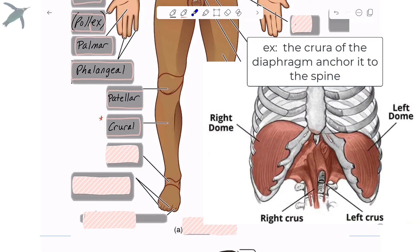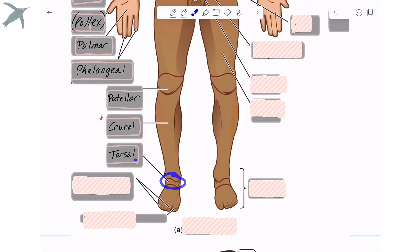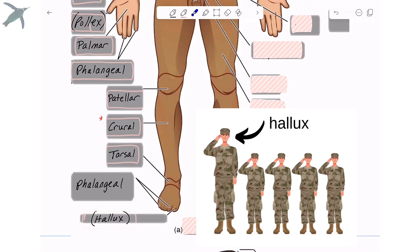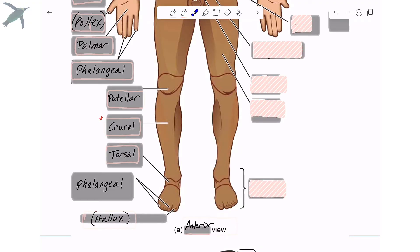The ankle region is known as the tarsal region. And we get a repeat here. The toes are also referred to as the phalangeal region. And we do have a term for the big toe, the hallux. And by the way, this is the anterior view.